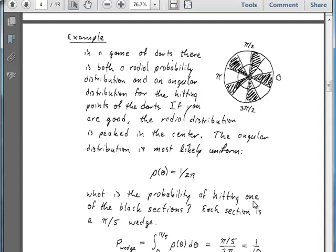So we can now ask, what's the probability of hitting one of the black sections? So we can look at these. Let's suppose that this is the angle zero right here. And then we go up. This is pi over 5, 2 pi over 5, 3 pi, et cetera. So by the time we get over here, we're at 5 pi over 5. And by the time we get over here, we're at 10 pi over 5.